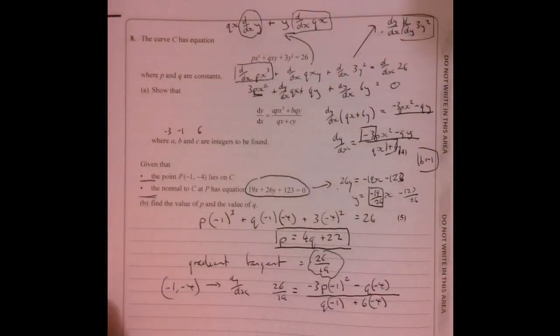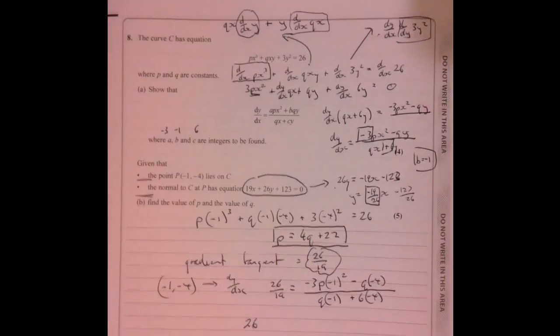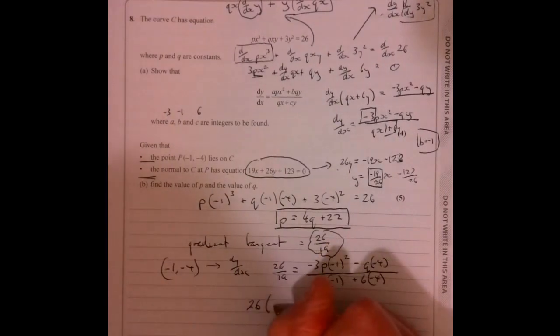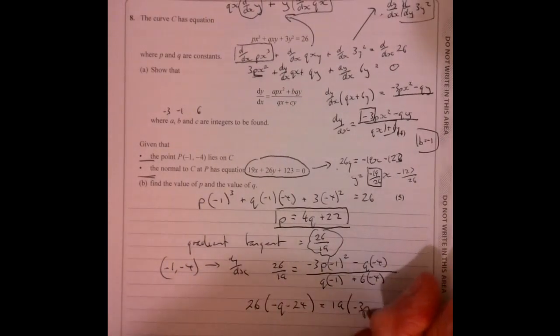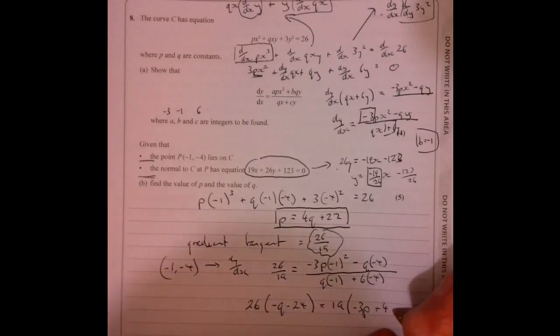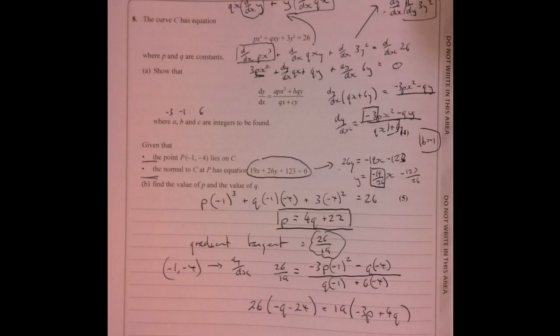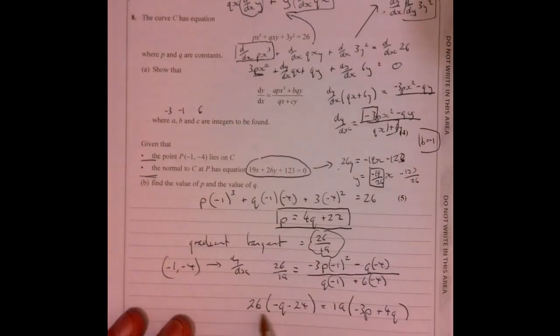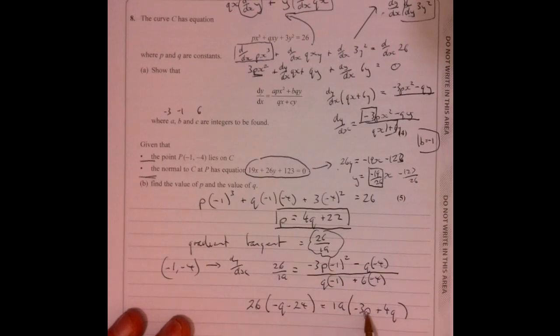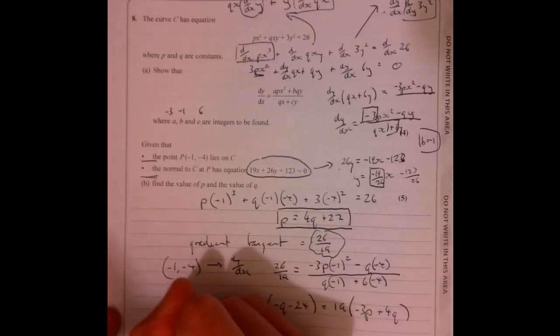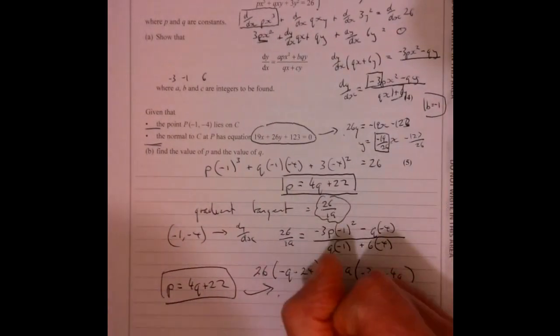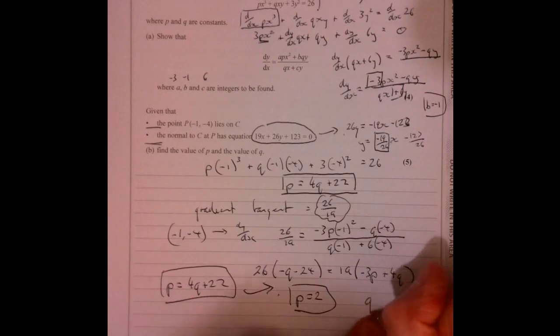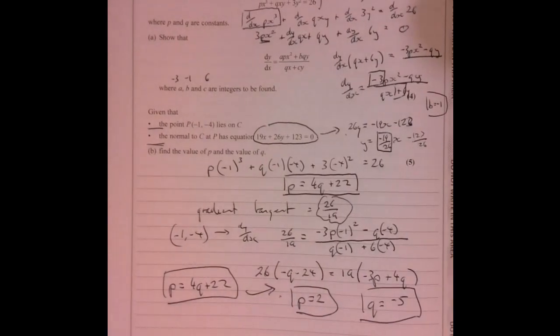I'm going to tidy this up a little bit, multiply by 19 over here and bring this over here. That's going to take me to 26(q - 24) equals 19. Be careful with the arithmetic here, it's very easy to make a mistake. If I multiply this out, tidy it up again, remember that p equals 4q plus 22, bring that back in, and then that will give you p equals 2 and q equals -5. And there you go.